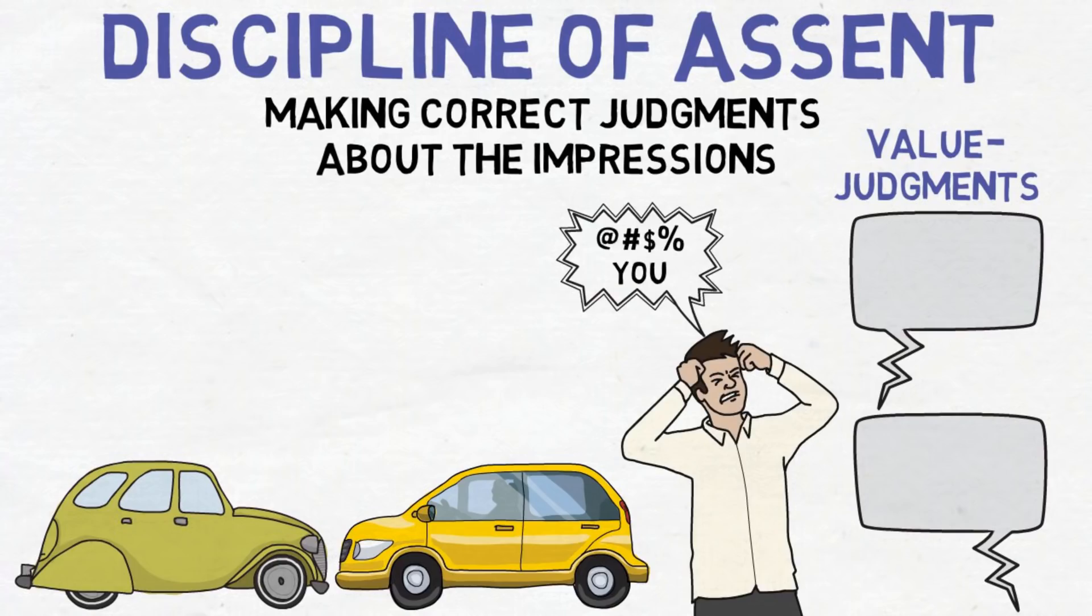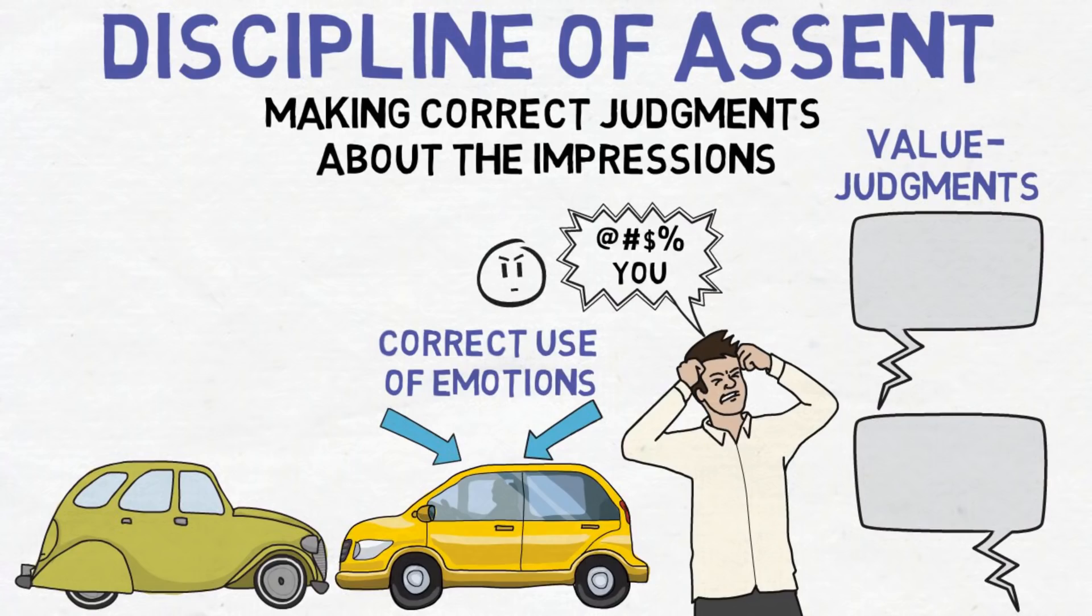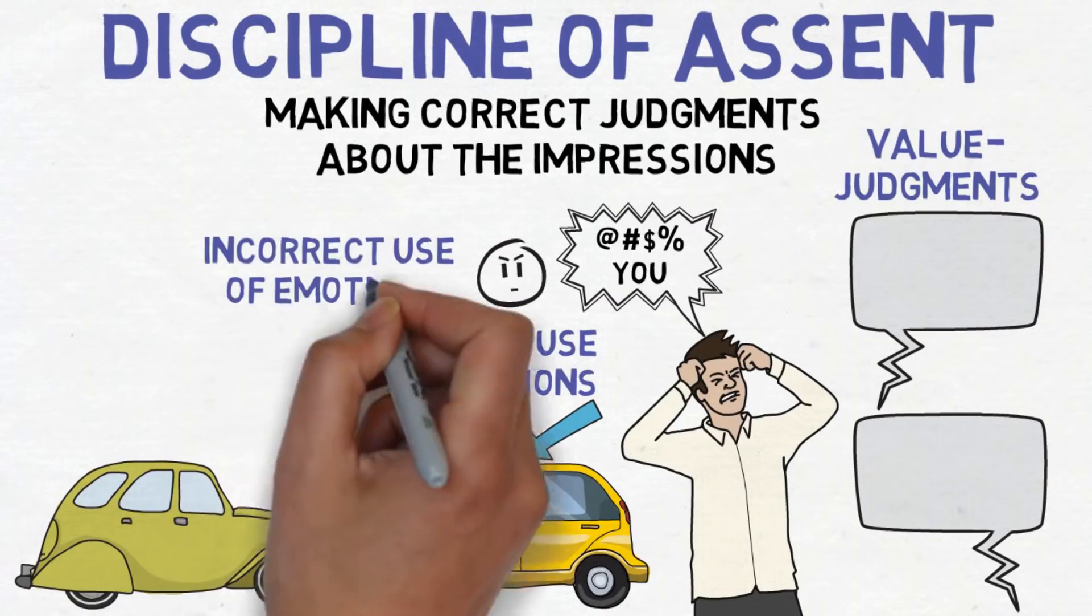Now, there are emotions at play here at different points. First, your emotions alerted you to danger and you reacted quickly in order to avoid it. This is the correct use of emotions. However, what happened next, right after you managed to avoid the accident, is that other emotions took over and made you angry. This is the incorrect use of emotions.